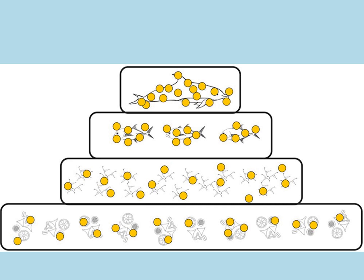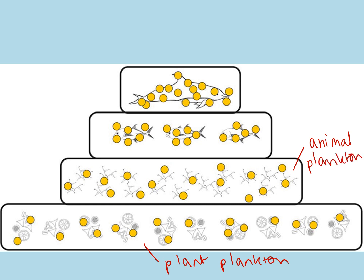This food pyramid is an example of bioaccumulation. At the bottom we have plant plankton, floating in the water and photosynthesizing. Then we have animal plankton — also tiny organisms you can't see with the naked eye — which float around and eat the plant plankton. Then we've got some small fish, and at the top a dolphin.